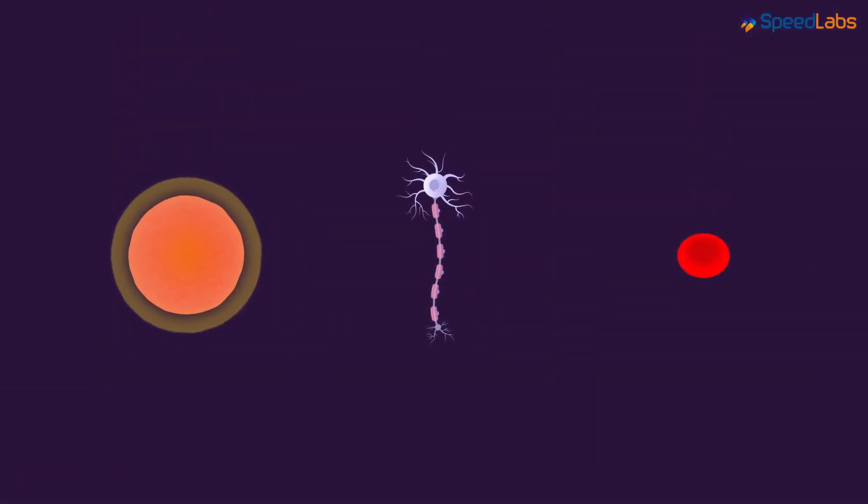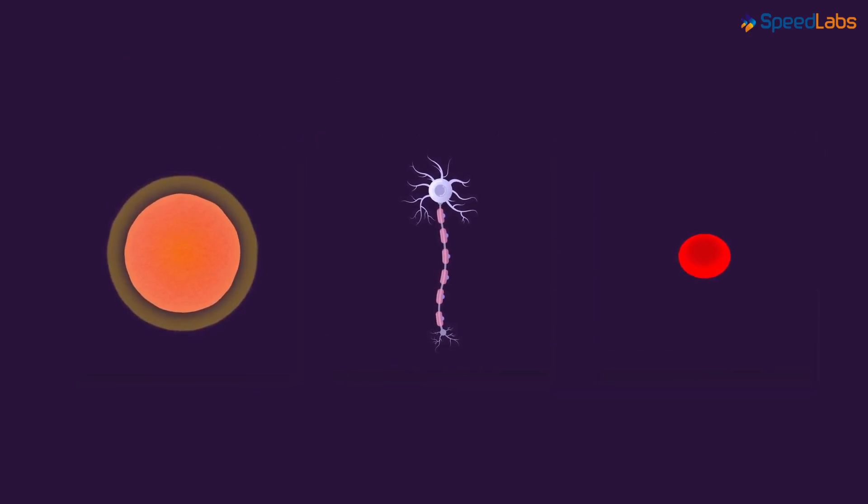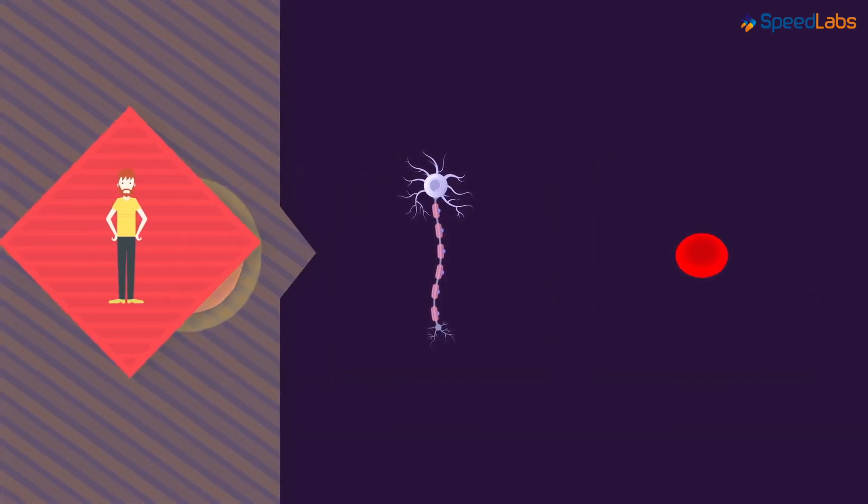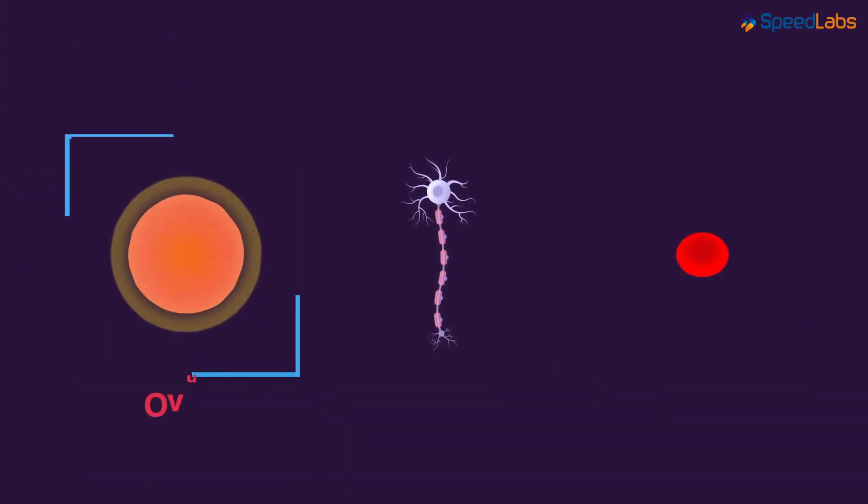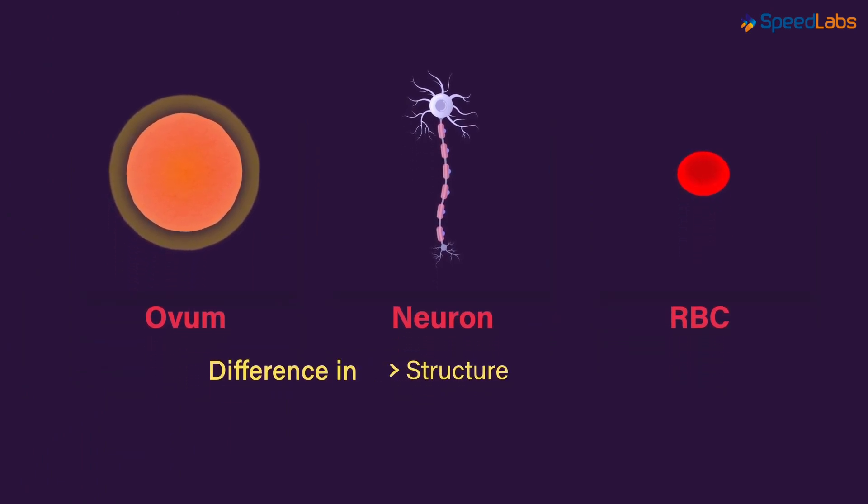Look at these cells for example. These look so different! But astonishingly, all three are a part of our body. This one is an ovum, this is a neuron, and the last one is a red blood cell. Their structures, shapes, sizes are totally different from each other, and so are their functions.